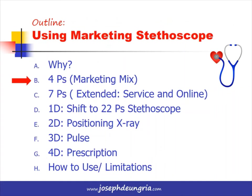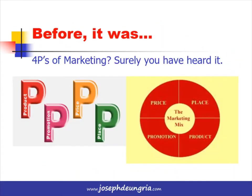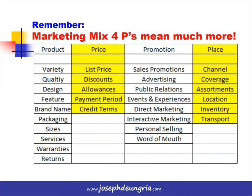Let's go to the 4Ps of the marketing mix. You have heard about this before: product, promotion, price, and place. It's good to remember that when we say product, we actually refer to variety, quality, design, features, brand name, packaging, sizes, services, warranties, returns, and so on. With the other Ps, there's not just the four Ps — they each mean so much more.